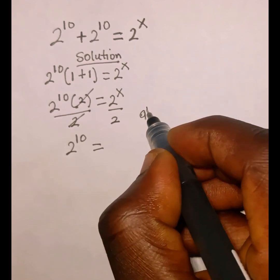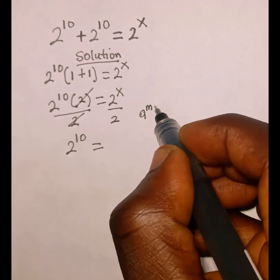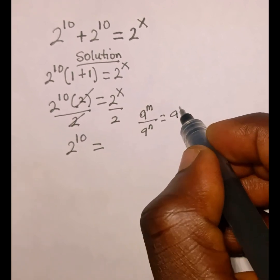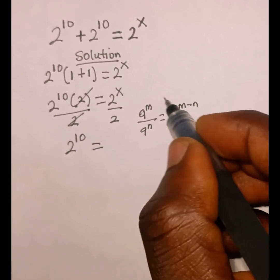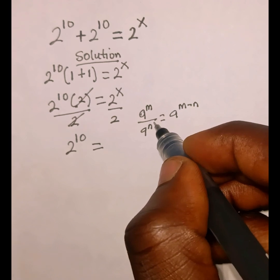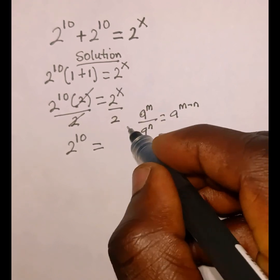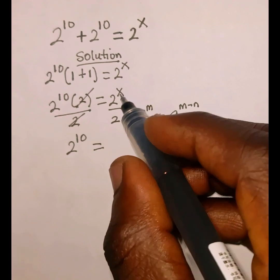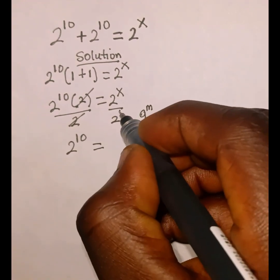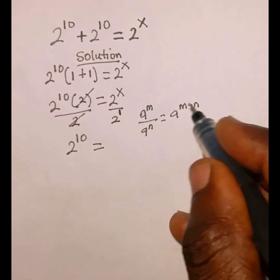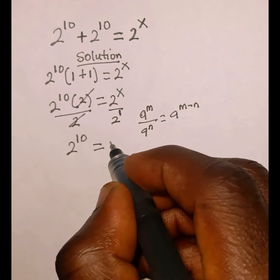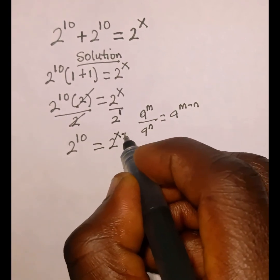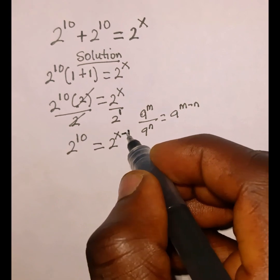Recall that when we have a raised to the power of m over a raised to the power of n, this is the same as a raised to the power of m minus n. This is the division property of indices. Here we have base 2 over base 2, the bases are the same. The power here is x, and recall that 2 is the same as 2 raised to the power of 1. So we pick the base which is 2, then we subtract the powers: the first power is x, then minus the second power which is 1.